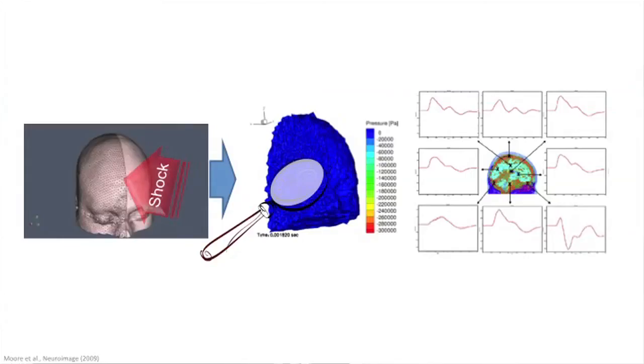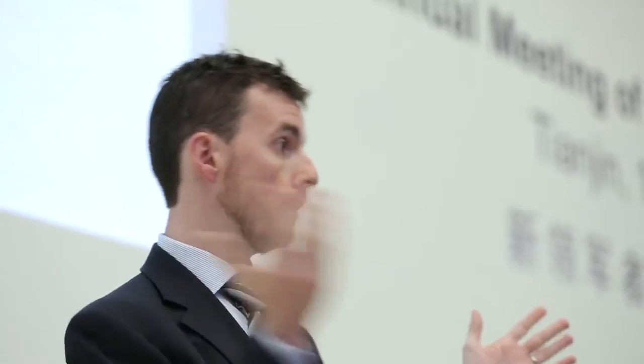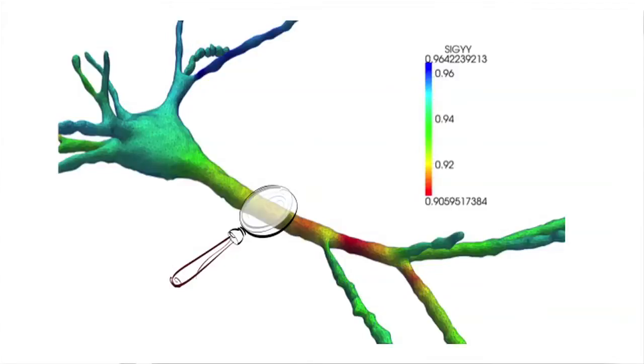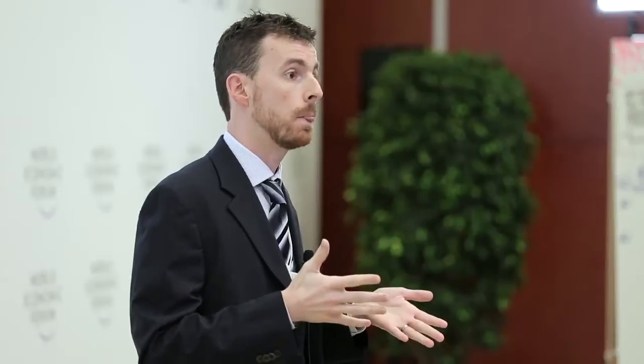Once you have this head model, you can put it in an environment of your choice and apply external forces to it — whether it's an impact, a punch, or even shock waves. You can then simulate how the whole head and all the organs inside it deform, measure the pressure and shearing forces, zoom in to an area of interest, transfer those forces to the cell level, and actually calculate how the cell is being deformed.